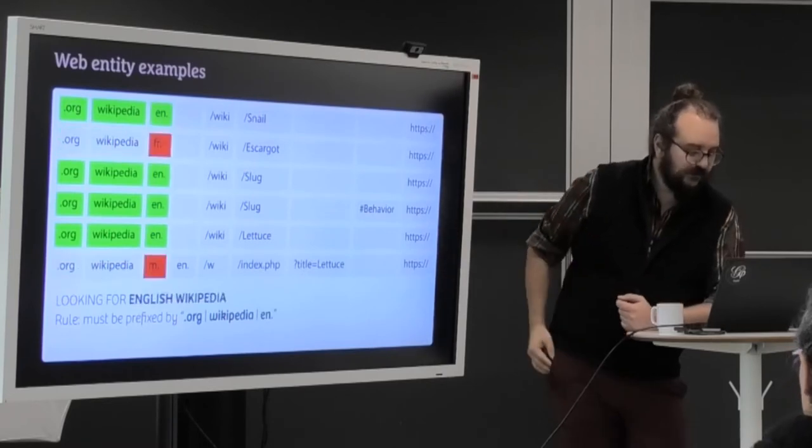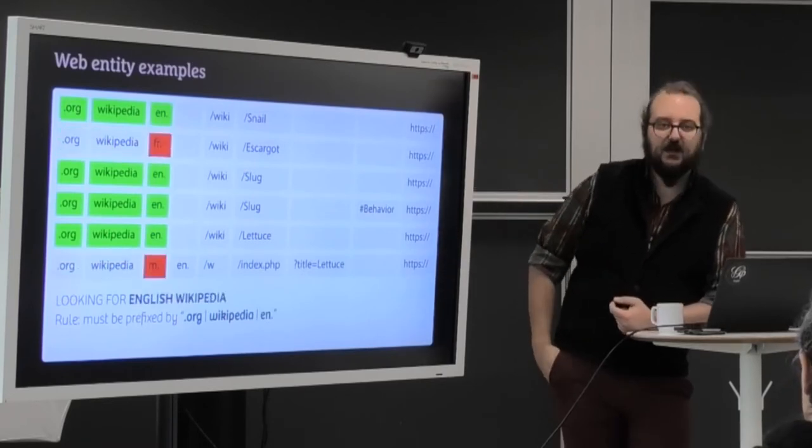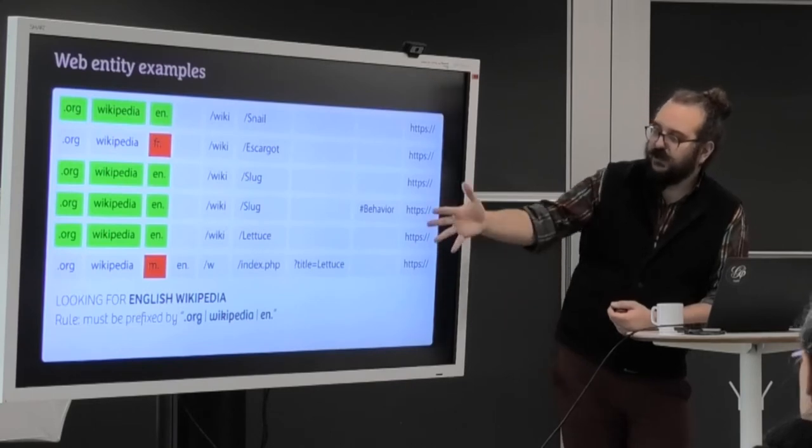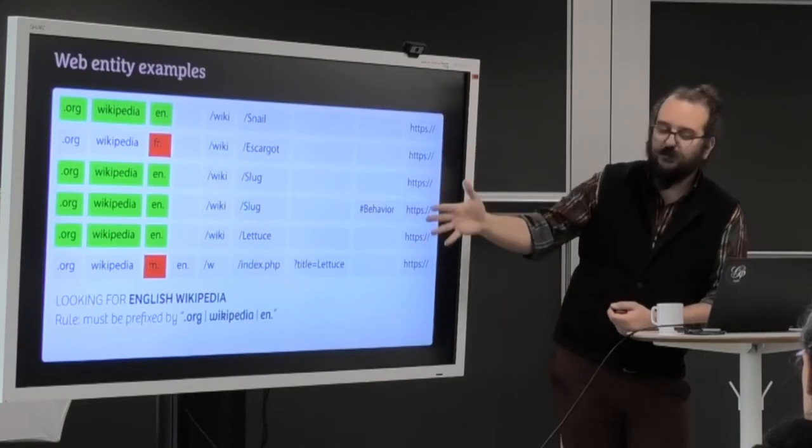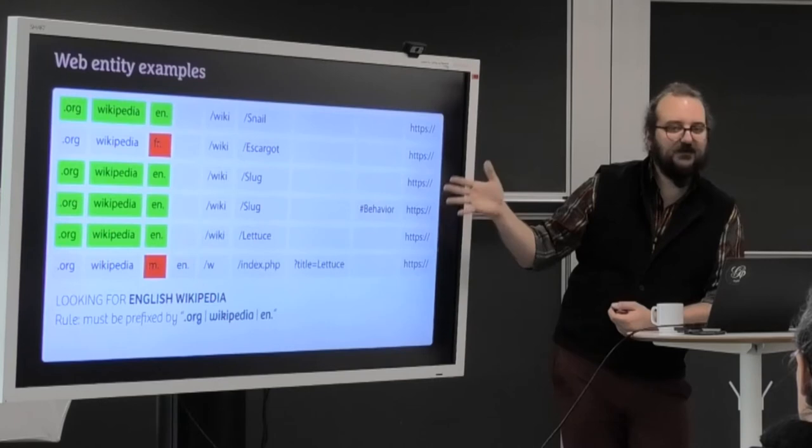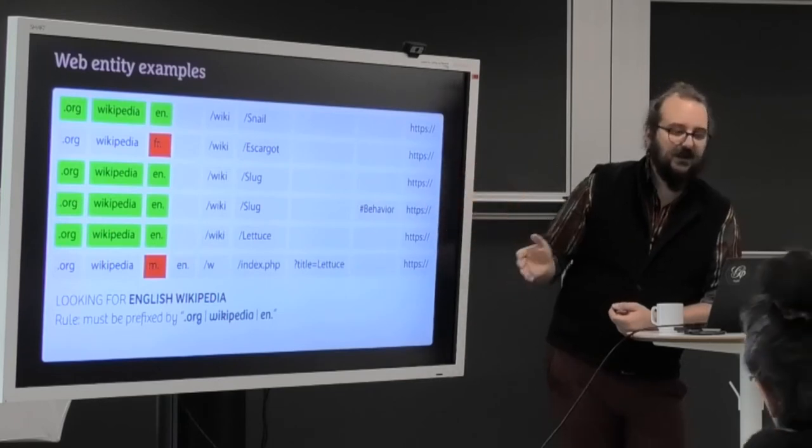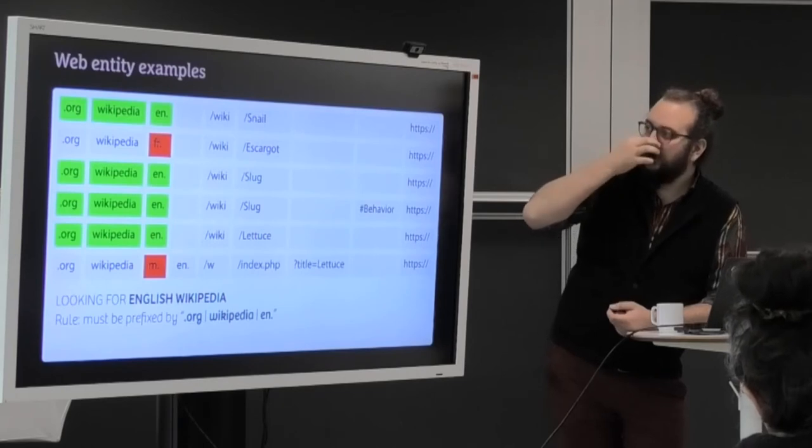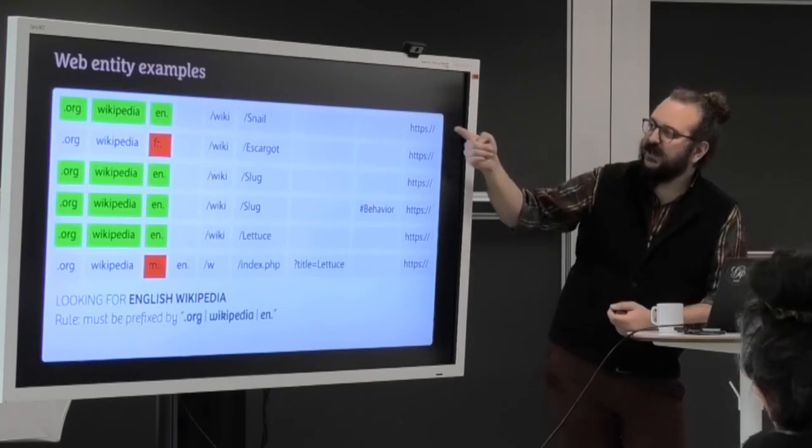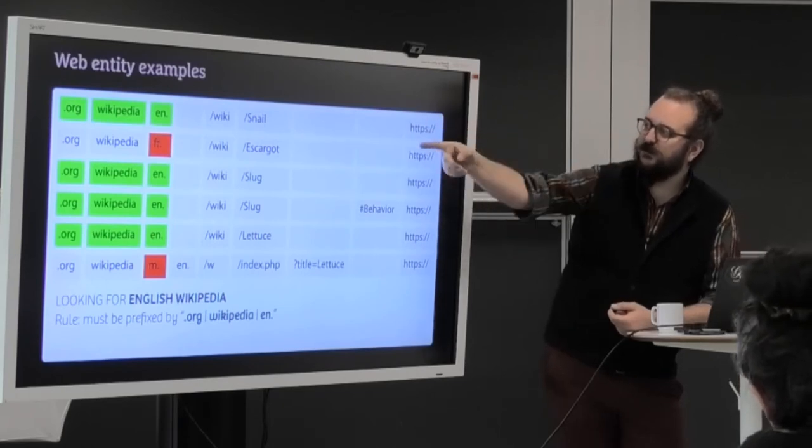Now, if we find a different rule, let's say, for instance, we just want English Wikipedia. We say we just take whatever starts with .org Wikipedia, EN, because the subdomain EN means English, right? It's the English version of Wikipedia. And if we do that, as you see, we get... So we don't get the French page, which is fine because it's not in the English Wikipedia. But we also miss the mobile page because even though it's EN, it starts by mobile.EN, right? So this one doesn't work.